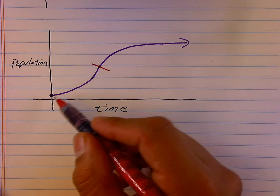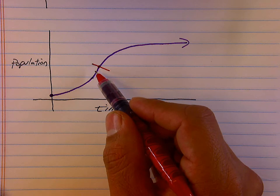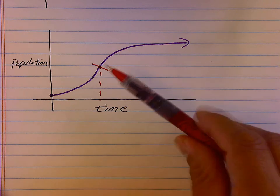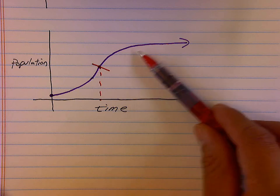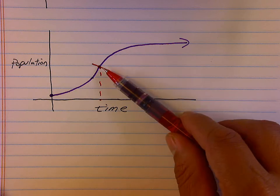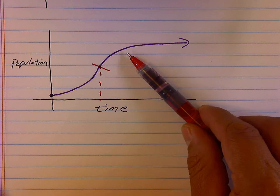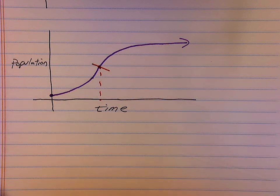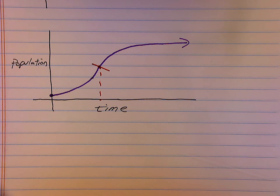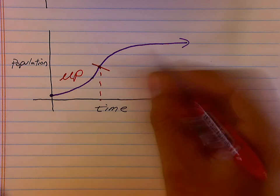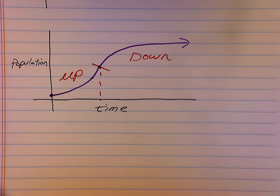Up until the transition point, my function is increasing at an increasing rate — it is increasing and concave up, because I am adding more and more to my rate of change. After this point, my function is still increasing — I'm getting more and more rabbits — but I am increasing at a decreasing rate. My function is concave down: I have a positive rate of change, but I am removing from that positive rate of change, so eventually my population will level off. The function is increasing over the full time interval graphed: first at an increasing rate (concave up), then at a decreasing rate (concave down).